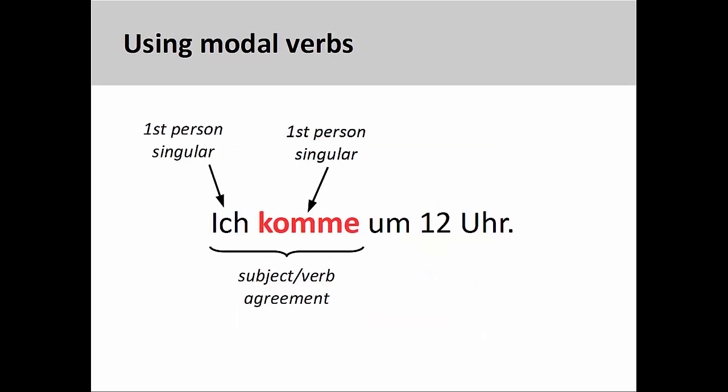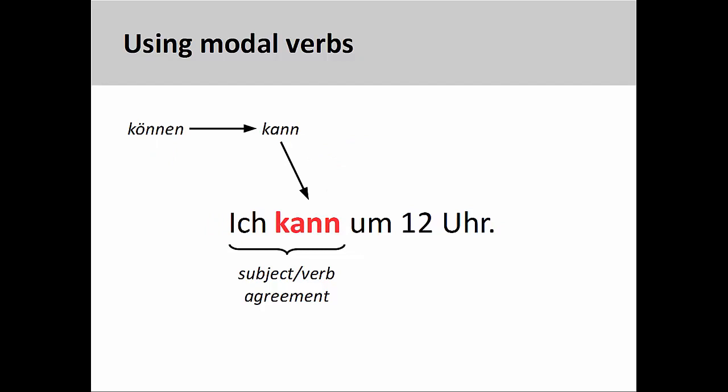At this point, I would instead like to demonstrate how to use modal verbs in a sentence. In the sentence you see here, ich komme um zwölf Uhr — I am coming at twelve o'clock — the verb komme is in the second position and there is subject-verb agreement between the first-person singular personal pronoun ich and the first-person singular verb form komme.